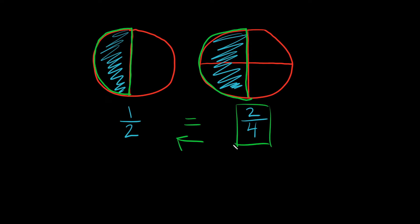On the left side there's two pieces and I ate one of them. And on the right side there's four total pieces and I ate two of them. But in both cases I only ate half of the pie. So we can say one half is equal to two fourths. Reducing a fraction is basically just taking this and converting it to something simpler, something with smaller numbers that are easier to work with.